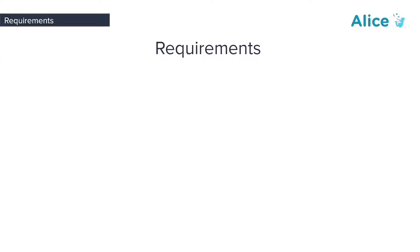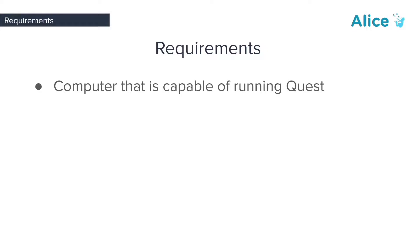Requirements! By the end of this tutorial, you will use, configure, and have installed the following: a computer capable of running a Quest, the Oculus Quest 2 — the VR headset we will be using — and you will also need to download and install Alice 3, the main software we will be using to create Alice projects.